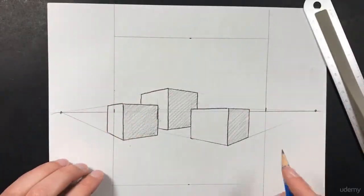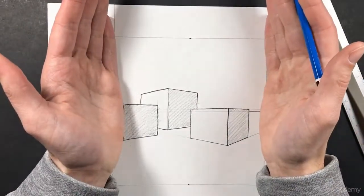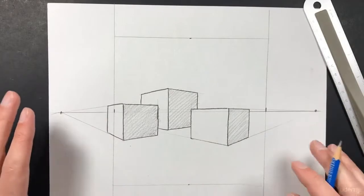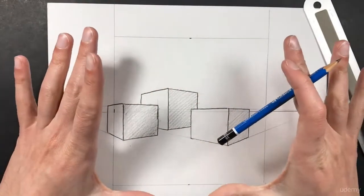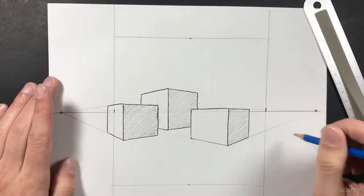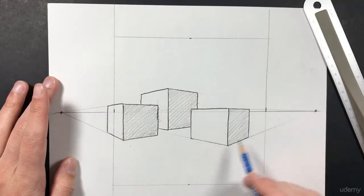Like so. And so now we have a guide. We have a guide for where our picture can be, so anything on the outside of this square we don't want to use. Now you can cut these edges off so that this is your only workspace, but I recommend you don't do that till the very end of your drawing because you still need to know where your vanishing points are.